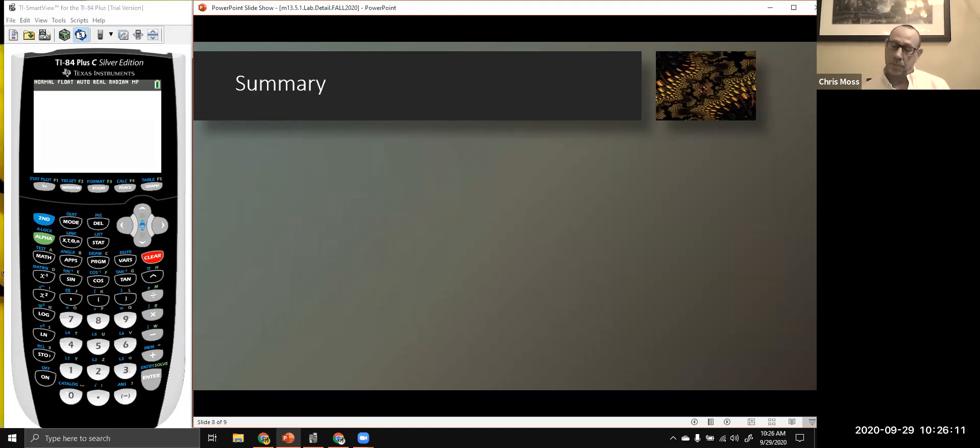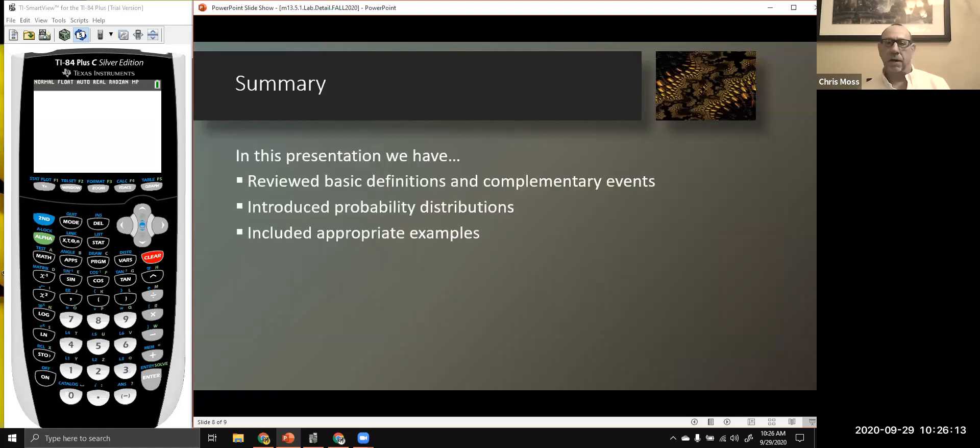So a bit of a summary. You've reviewed those basic definitions for events and complementary events. We've taken a look at a probability distribution and we've included some appropriate examples. So this really should help you with the review. And in turn, that will help you interpret the material in chapter five. At least that is my hope.